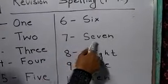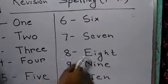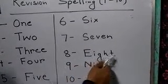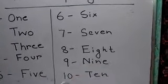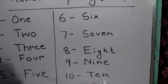7. S, E, V, E, N. Seven. 8. E, I, G, H, T. Eight. 9. N, I, N, E. Nine. 10. T, E, N. Ten. Clear?